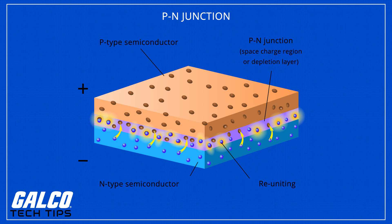This process changes the material in a way that either adds extra electrons to the material, known as n-type, or creates holes in the material's crystal structure, known as p-type.